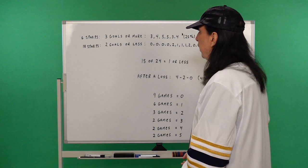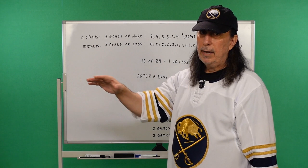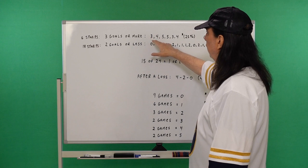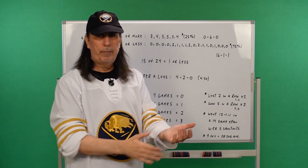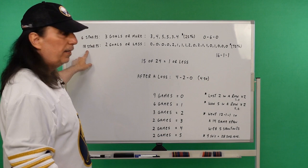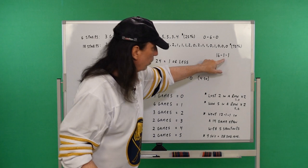Now, six starts, he's let in three goals or more out of his 24 starts. In six starts, he's let in three goals or more, which were three, four, five, five, three, and four. That's 25% of the games that he played. He's let in three or more goals. Northeastern's 0-6-0 when he's let in three goals. Simple as that.